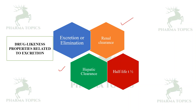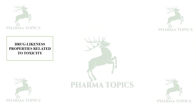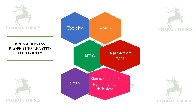Drug likeness properties related to toxicity include assessment of cell viability by the Ames test, hERG inhibition to determine cardiotoxicity, hepatotoxicity via drug-induced liver injury, LD50, skin sensitization, and recommended daily dose — all of which can be predicted using computational methods.